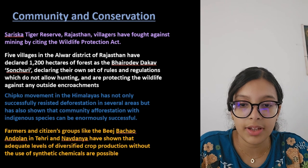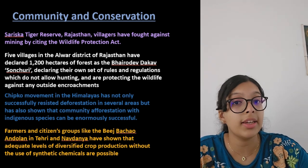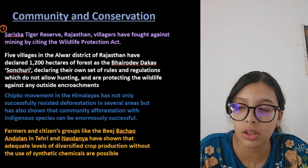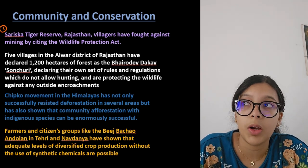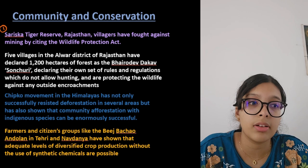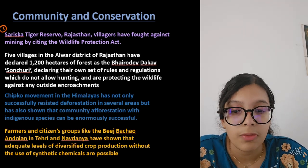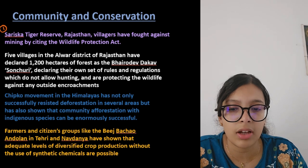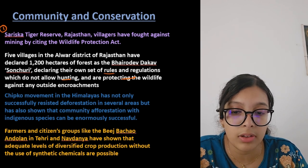In Sariska Reserve, Rajasthan, villages fought against mining at the site by invoking the Wildlife Protection Act of 1972. This was one of the first incidents where people themselves came forward to protect the environment. For board exam questions on how community and conservation go together, you can write these examples: communities cited the act and stood against exploitation.